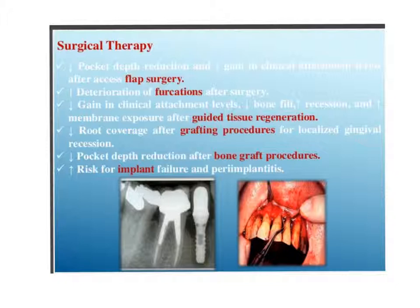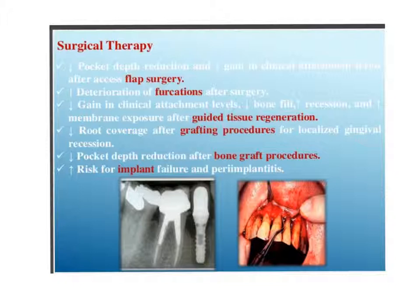For surgical therapy, smoking decreases pocket depth reduction and gain in clinical attachment level after access flap surgery, increases deterioration of furcations after surgery, and decreases bone fill. It also increases recession and membrane exposure after guided tissue regeneration, decreases root coverage after grafting procedures for localized gingival recession, decreases pocket depth reduction after bone graft procedures, and increases the risk for implant failure and peri-implantitis.